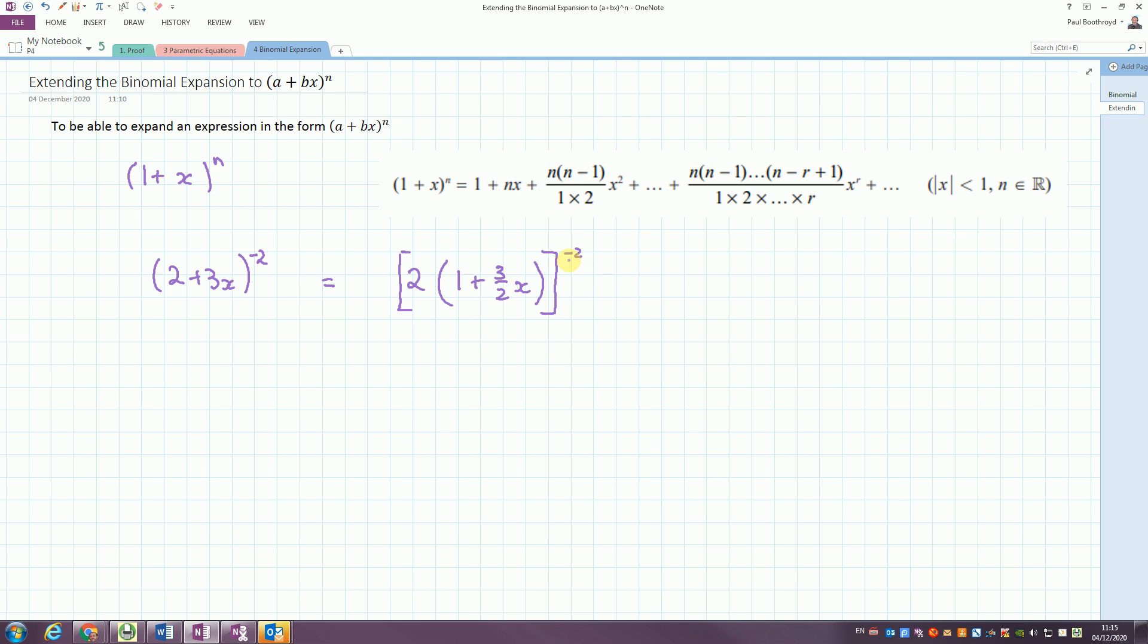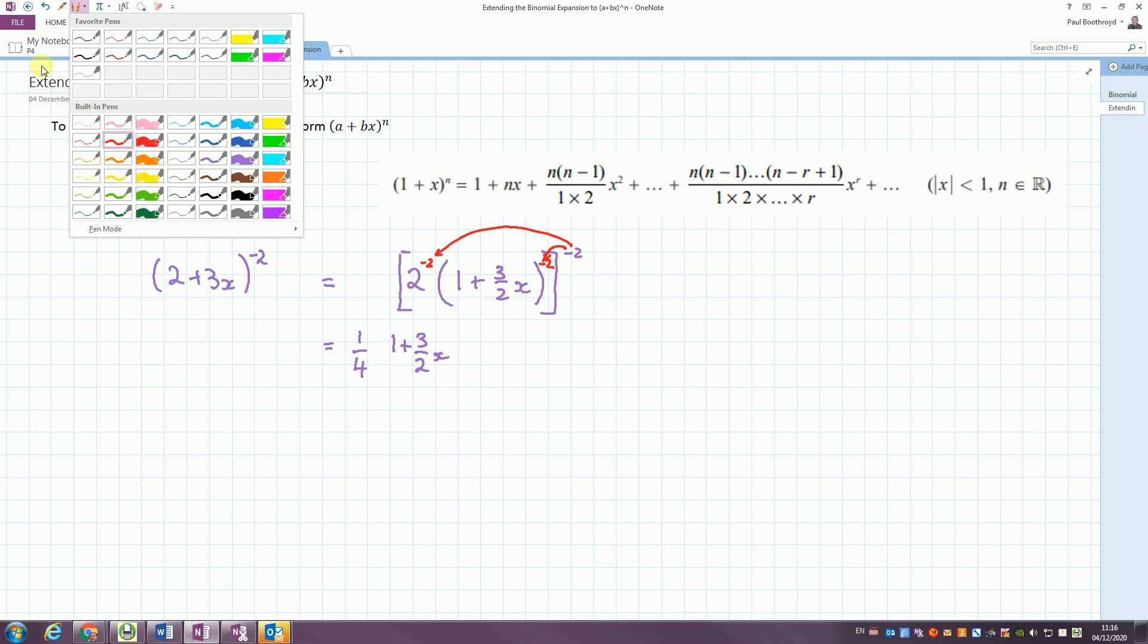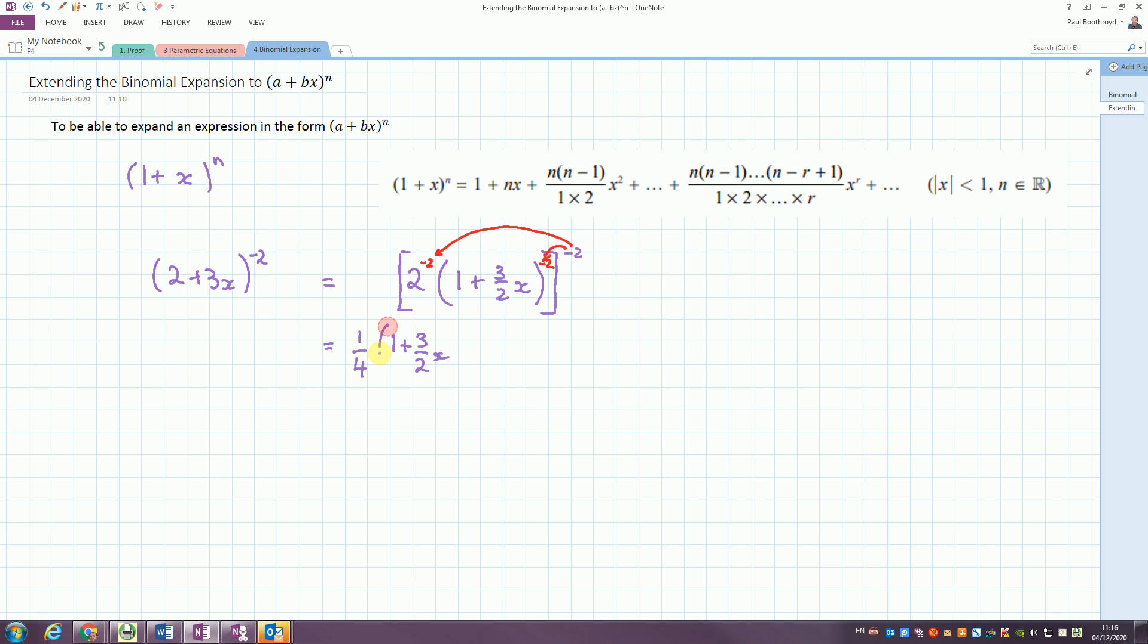So if we now take these values out, we have squared to the minus, that's a quarter, and it's a quarter times the expansion of the rest of the bracket, the 1 plus 3 over 2x. So what I've actually done is I've distributed the power of minus 2 to both parts inside the bracket.